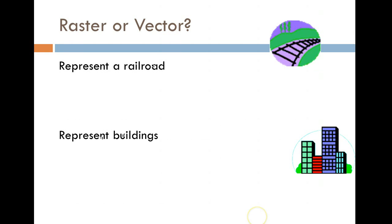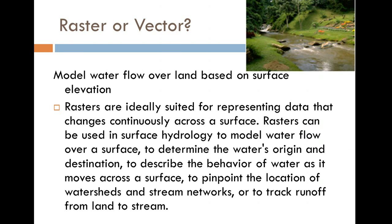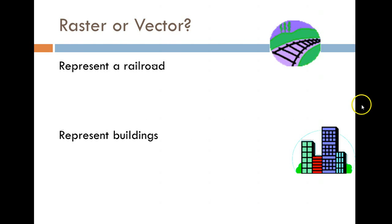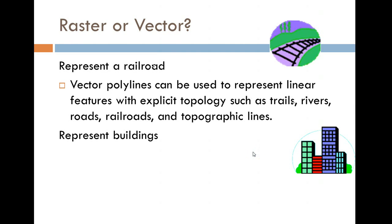What would you use for a railroad? Polylines - right. Linear features, the topology exists. You're not going to have the trail run over and overlay the railroad, so you could set up those topologies - unless you're going to cross only at right angles. So vector polylines are the appropriate format for a railroad.